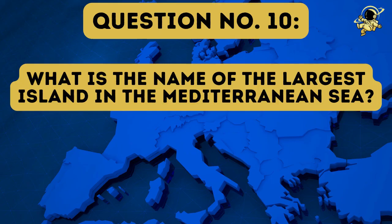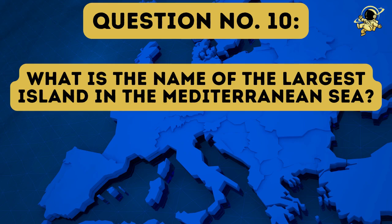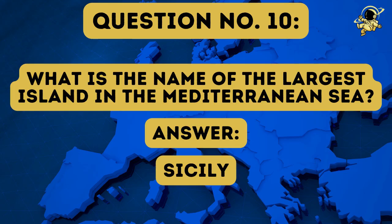And now we come to question number nine: Which country in Europe is known for its fjords and mountains? And the answer to question number nine is Norway. And now we come to question number ten: What is the name of the largest island in the Mediterranean Sea? And the answer to question number ten is Sicily. I personally have never been to Sicily, but to its neighbor Sardinia — it's a great place for diving.